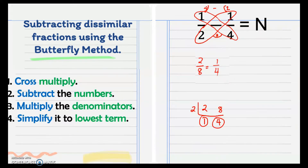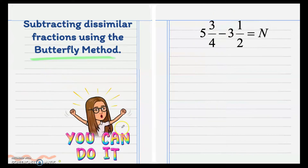It is called the butterfly method since as we go through the process we form a butterfly. Let's have more examples. We have here 5 and 3/4 minus 3 and 1/2.